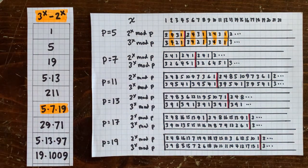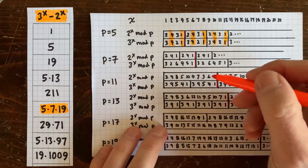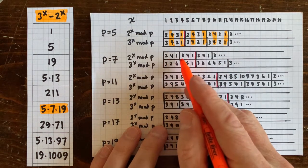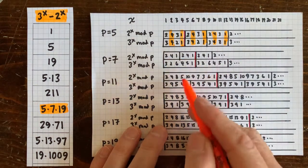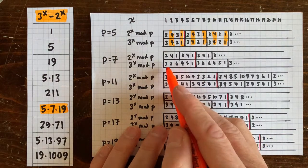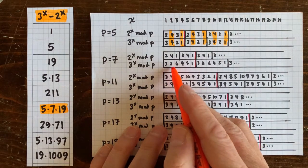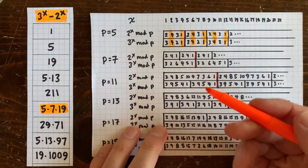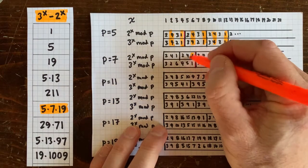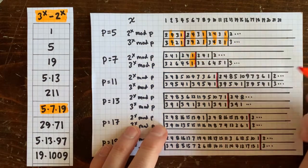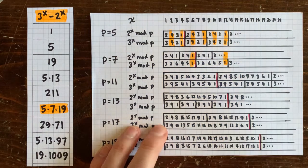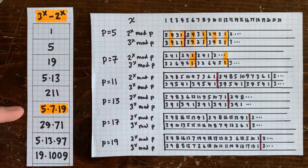When is it divisible by 7? It looks like 2 to the x has a cycle of length 3 — it goes 2, 4, 1, 2, 4, 1 — while 3 to the x has a cycle of length 6. So they agree only on every 6th x, and that's why there's a 7 here.